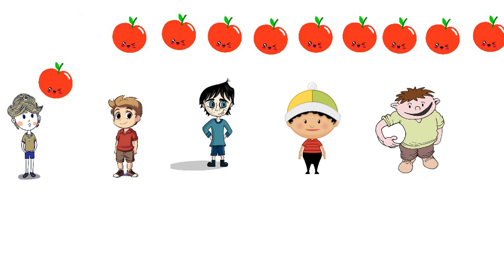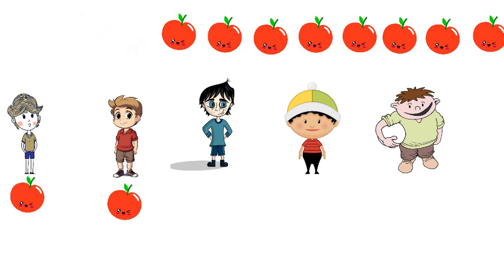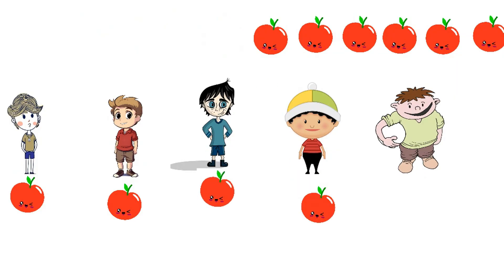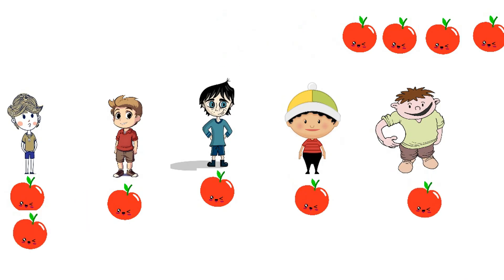We'll share the ten apples equally among the five children. Each child gets the same number of apples. Division means sharing equally. Let's share them.